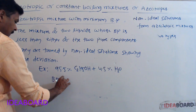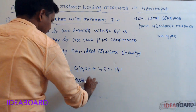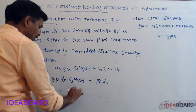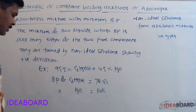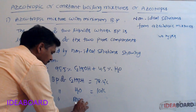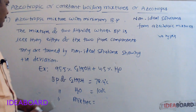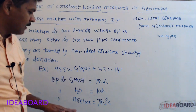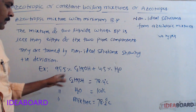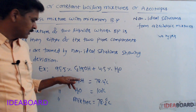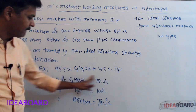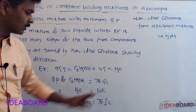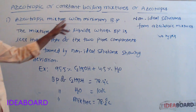The boiling point of pure ethyl alcohol is 78.4°C and the boiling point of pure water is 100°C. When these two liquids are taken in this composition, the boiling point of the mixture is 78.4°C, which is less than the boiling point of either pure component. So this mixture acts as an azeotropic mixture with a minimum boiling point.